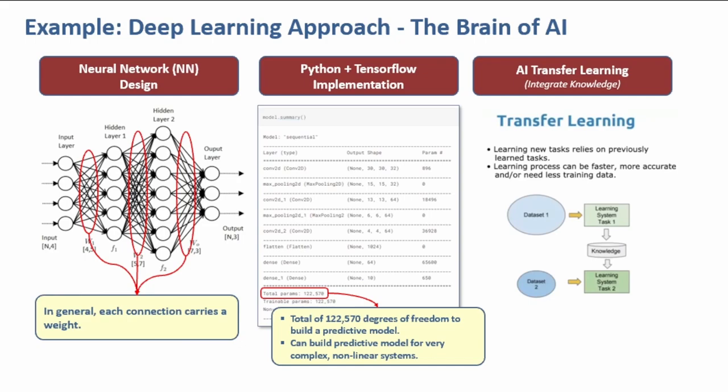The transfer learning capabilities of AI allows it to store knowledge gained from solving one problem and apply it to a different but related problem. It allows intelligence to evolve faster.